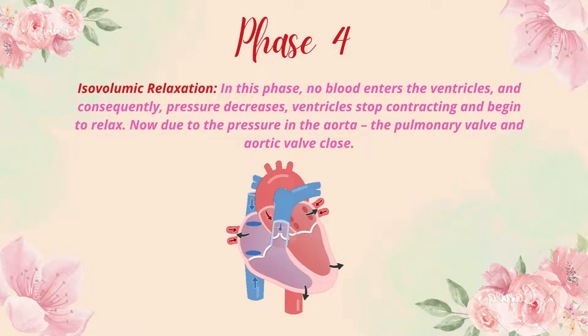Phase 4 is isovolumic relaxation. In this phase, no blood enters the ventricles and consequently the pressure decreases. The ventricles stop contracting and begin to relax. The pulmonary valve and aortic valve close due to the pressure in the aorta, all valves are closed, and there is total relaxation in the ventricles with no change in volume.